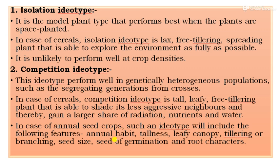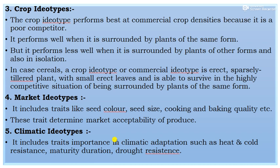Especially in cereals, competition ideotype traits like tall, leafy, or pre-tillering plants create more shading effect on less aggressive plants. Cereal crops thereby gain a larger share of radiation, nutrients, and water. In the case of annual seed crops, the competition ideotype includes: annual habit, tallness, leafy canopy, tillering or branching, seed size, seed germination, and root characters.